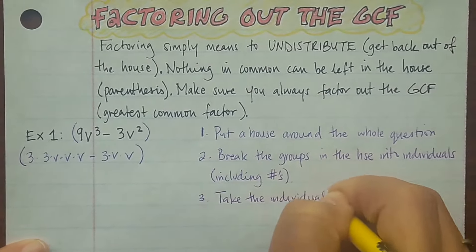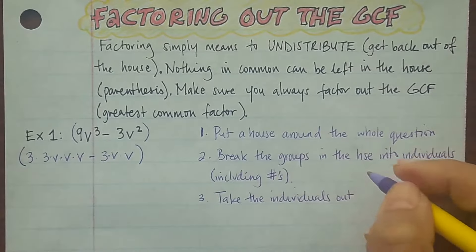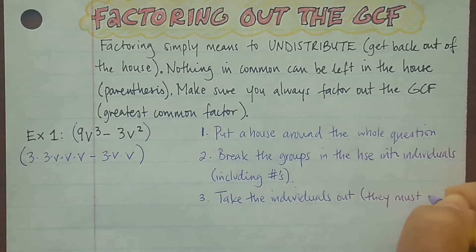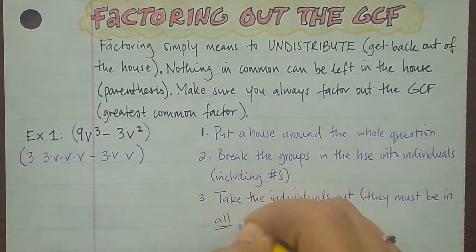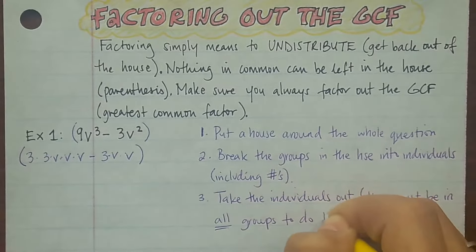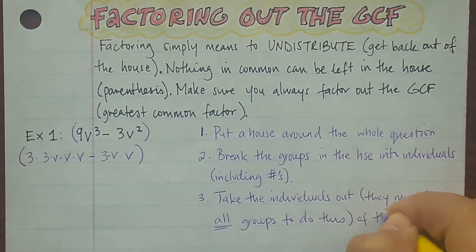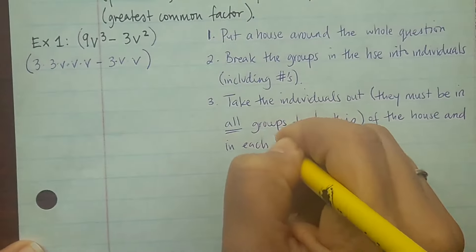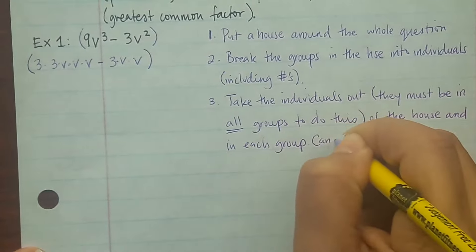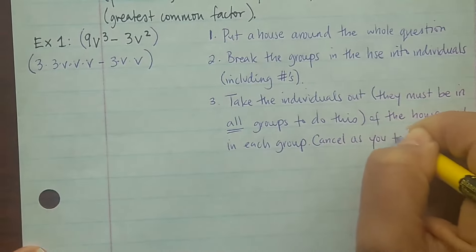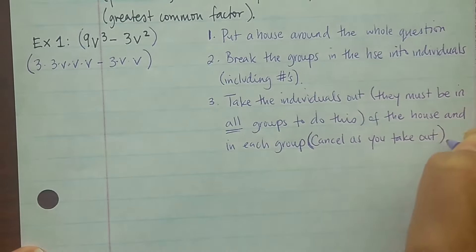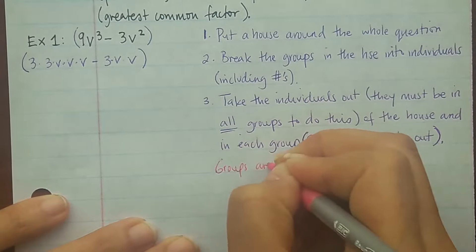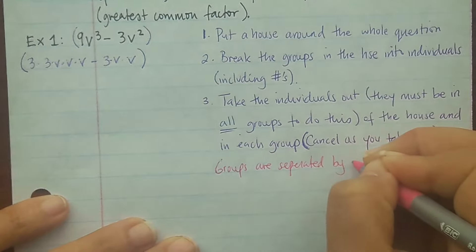Alright, take the individuals out. Remember, they must be in all groups to do this. Color in: they must be in all groups to do this. And then cancel as you take them out, so that you keep track of what you got.